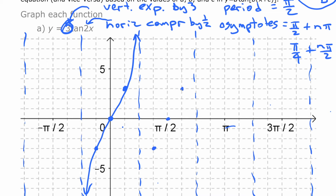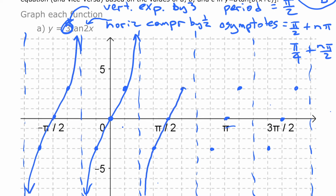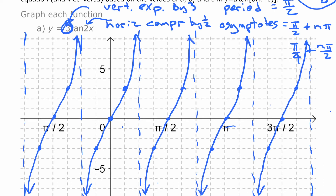We can use those three guide points to get the shape right, drawing one of the branches of the curve and then repeating for the rest. And there you have the graph of y equals 3·tan(2x).